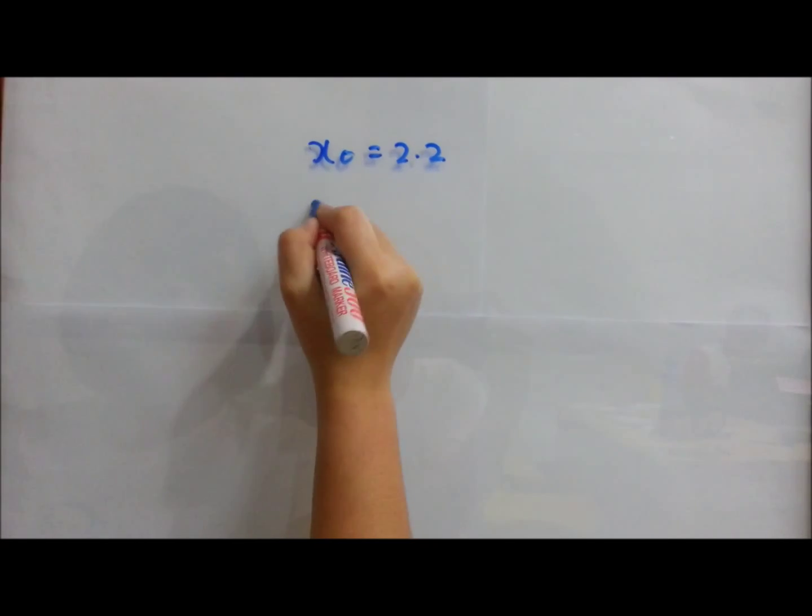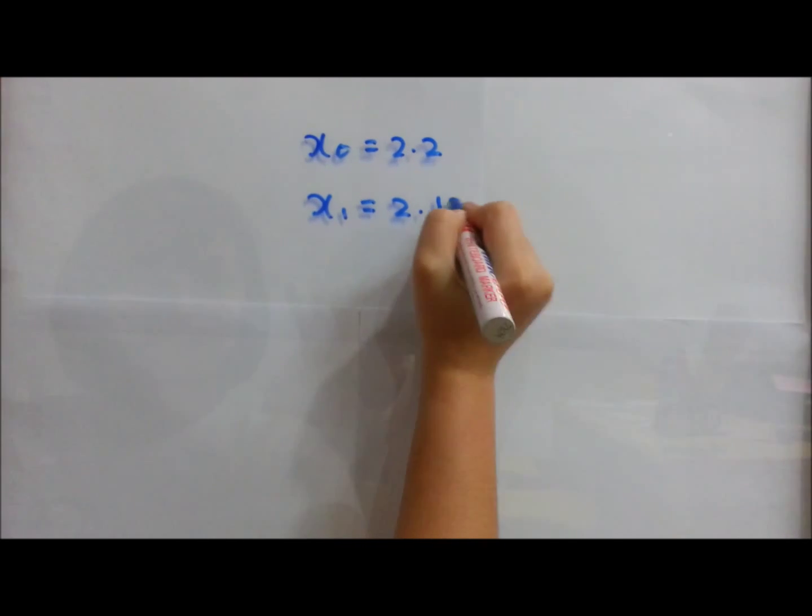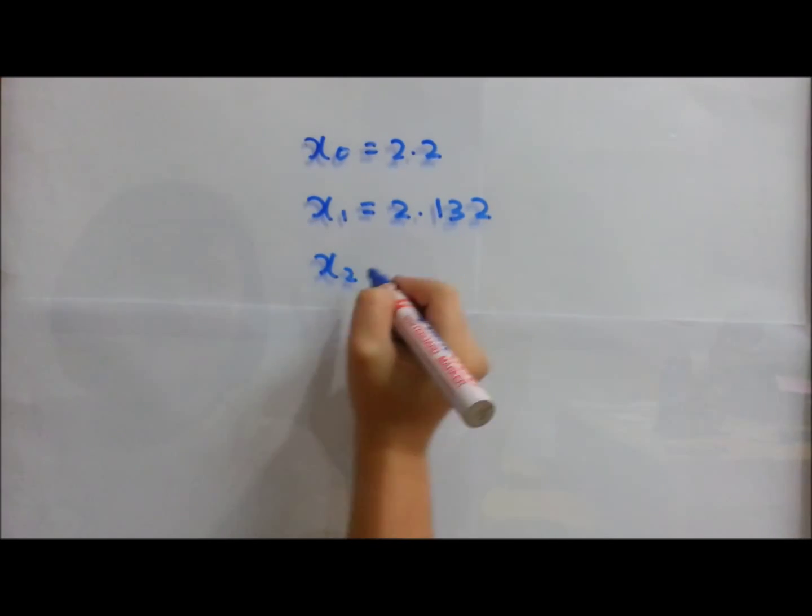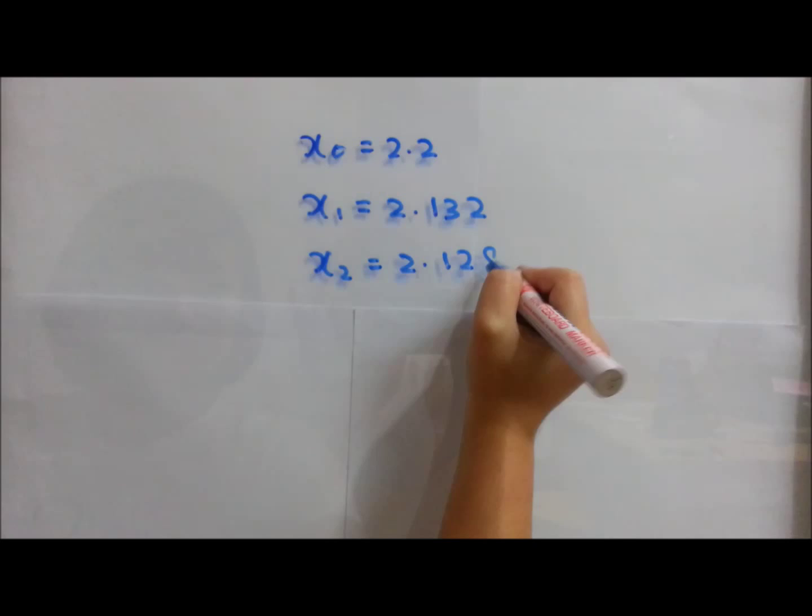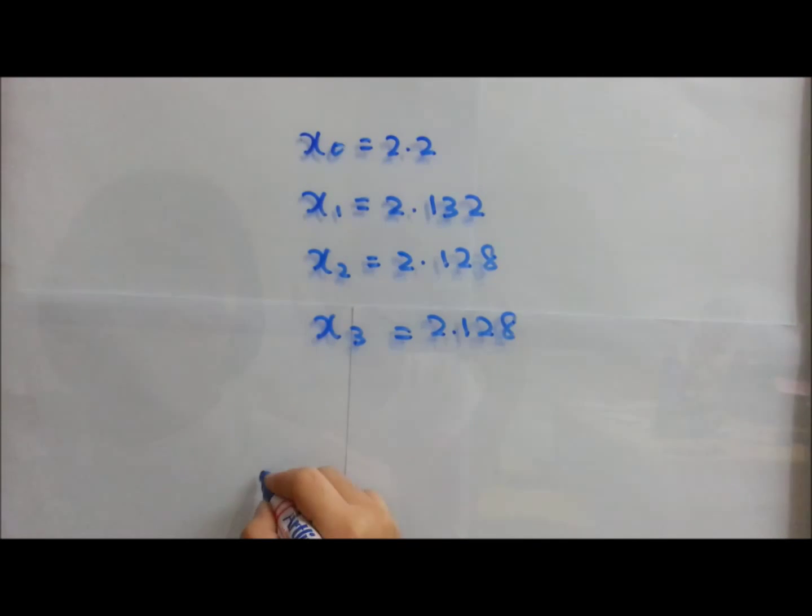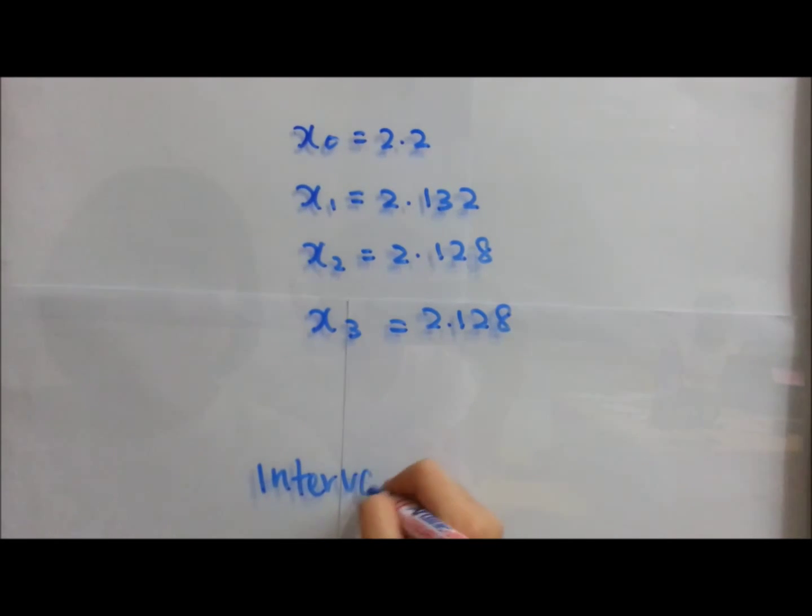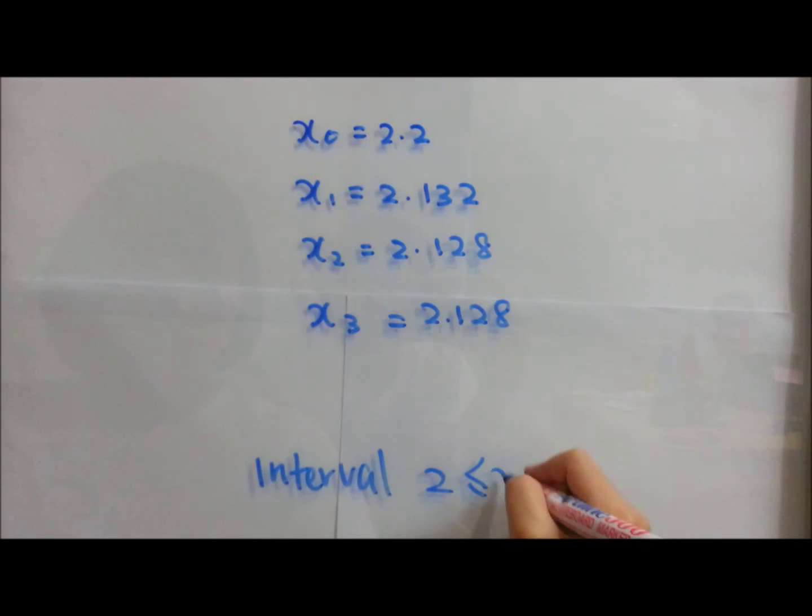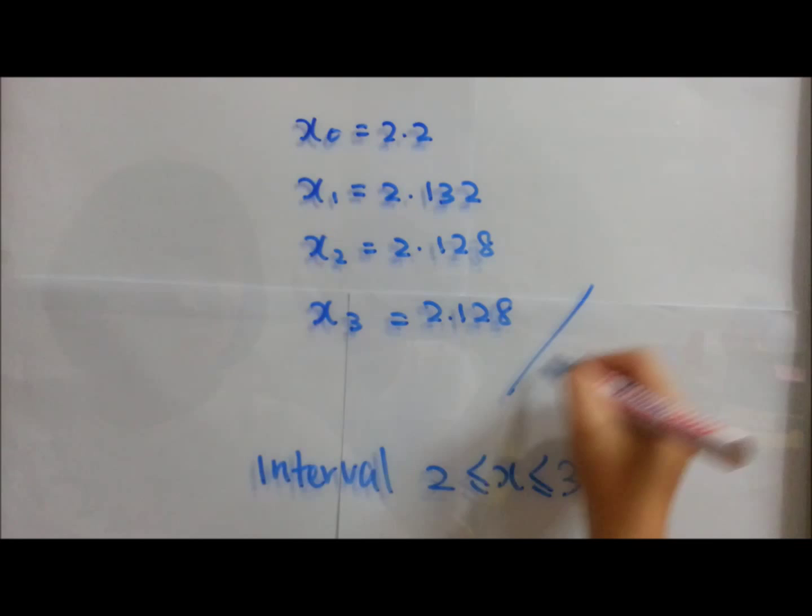For your final answer, you will get x₀ equal to 2.2, x₁ equal to 2.132, x₂ equal to 2.128, and x₃ equal to 2.128. All these answers fulfill the interval which is between 2 and 3.